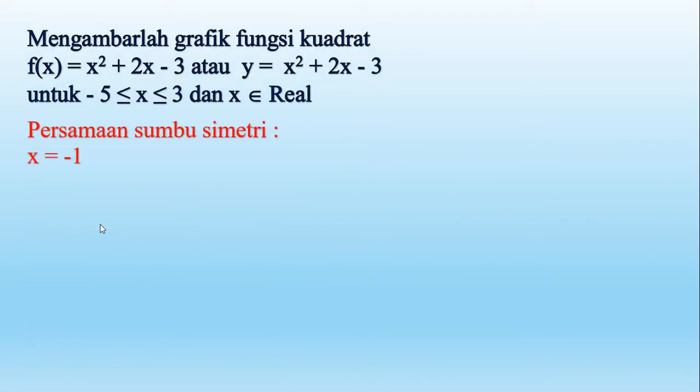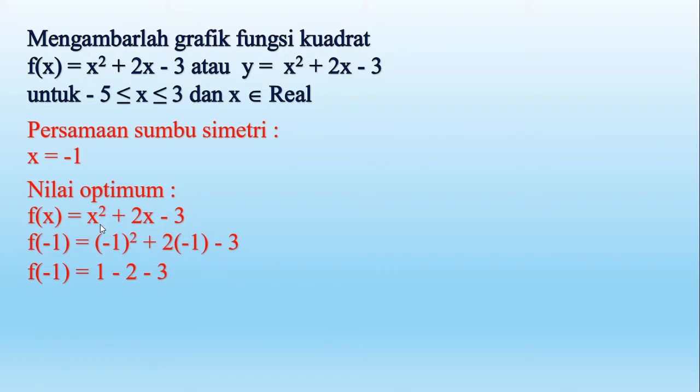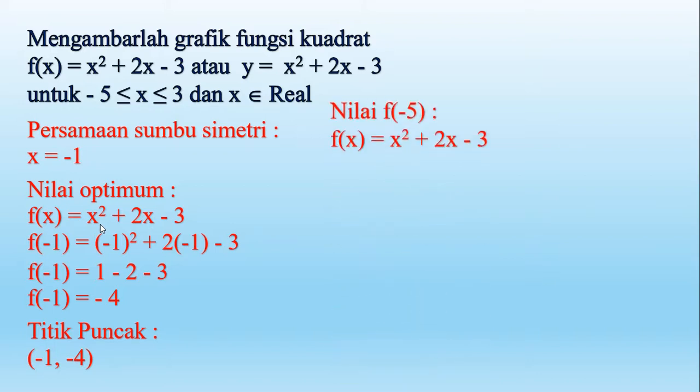Perhatikan, persamaan sumbu simetrinya tadi x sama dengan negatif 1, kemudian nilai optimumnya yaitu kita bisa hitung kita masukkan dari f(-1). f(-1) yaitu (-1) kuadrat tambah 2 kali (-1) dikurangi 3, negatif 1 kuadrat 1, 2 kali negatif 1 negatif 2 dikurangi 3, berarti nilainya yaitu negatif 4. Jadi titik puncaknya atau titik baliknya yaitu (-1, -4). Nah ini merupakan nilai minimum karena puncaknya ada di bawah karena a-nya positif maka parabola terbuka di atas memiliki nilai minimum.